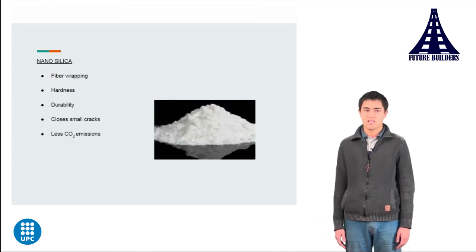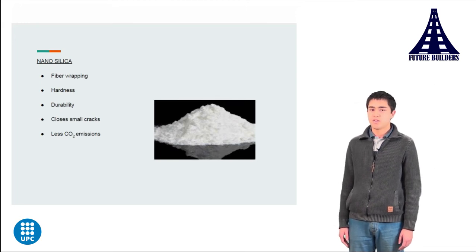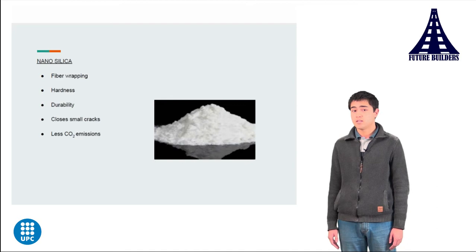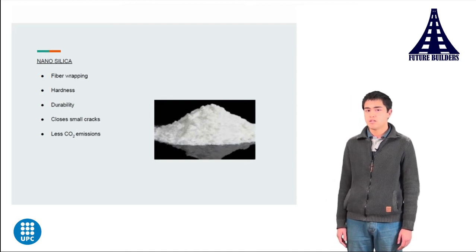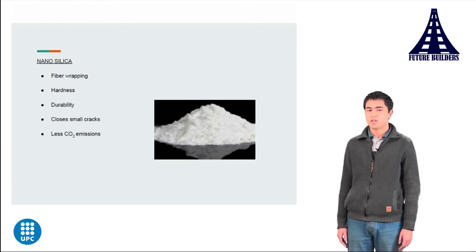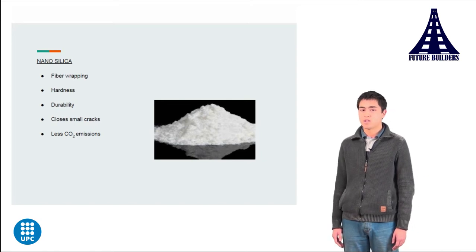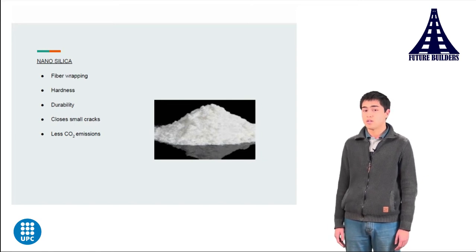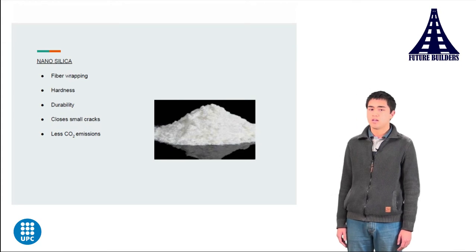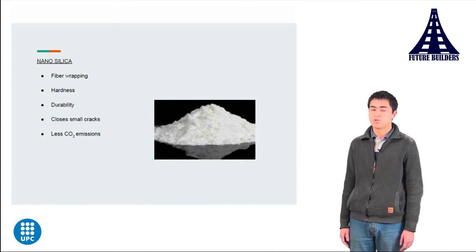Nanosilica is useful when added to a fiber sheet to create a matrix. This matrix has strong bonds between the cement surface and the fiber reinforcement. It also helps to close small cracks on the surface, while increasing durability and hardness and reducing CO2 emissions.